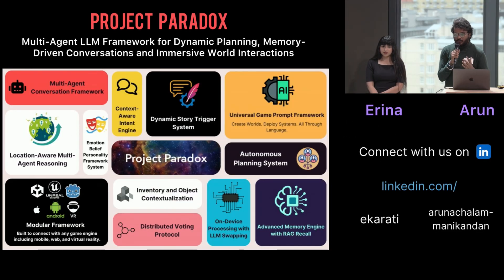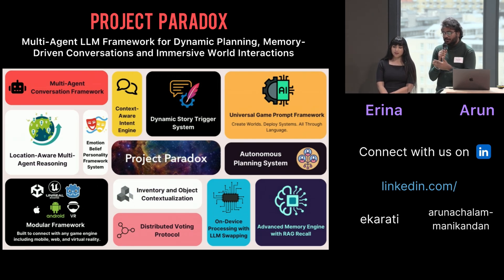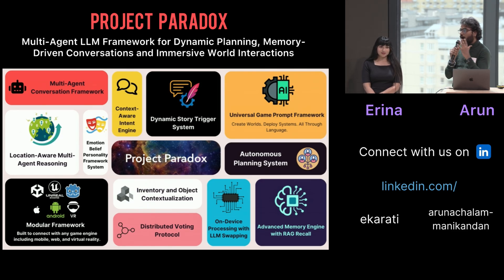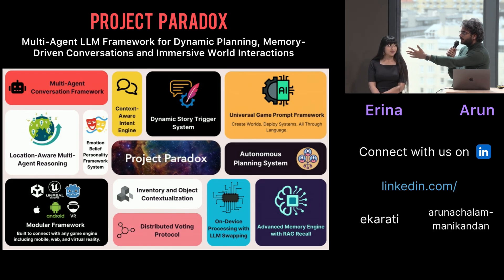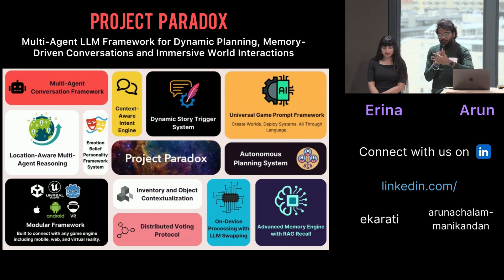We actually started by making a social deduction game like Blood on the Clocktower. We realized we had to rework a lot of stuff, so we started making everything generic where all you have to do is edit by prompts. Then we realized we had almost created a multi-agent framework. Our goal, coming from the perspective as developers, is developers first. For example, if you want the agents to collaboratively vote, you can use our voting protocol and have a game where voting is involved. Our primary aim is for the developers.